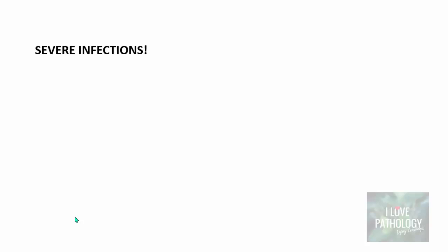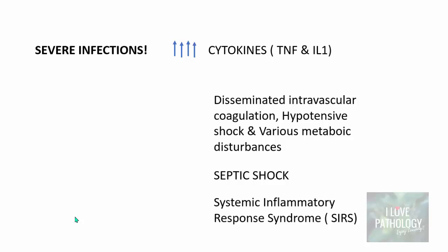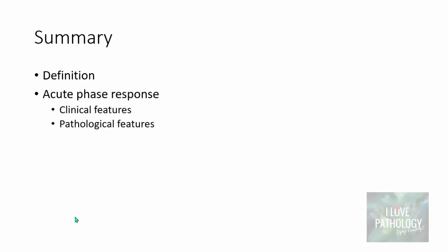If the infection is extremely severe, it results in more and more production of cytokines, which is harmful to the body. This can lead to disseminated intravascular coagulation, hypotensive shock, and various metabolic disturbances — collectively referred to as septic shock or systemic inflammatory response syndrome. In summary, the acute phase response manifests clinically as fever, increased pulse pressure, rigors, chills, malaise, and somnolence; and pathologically as leukocytosis, thrombocytosis, anemia, and a rise in acute phase proteins.